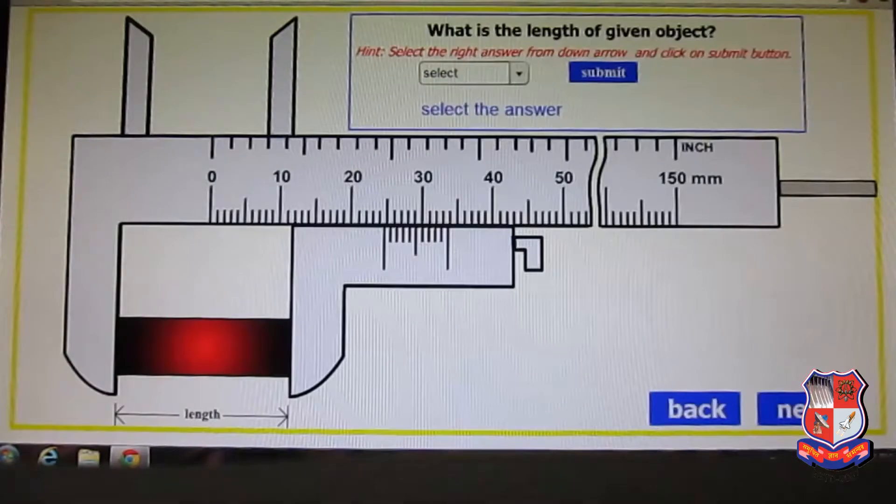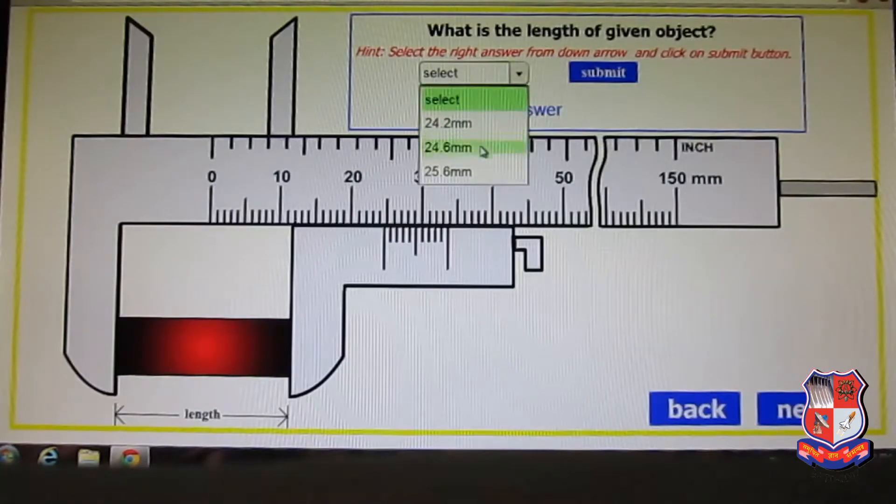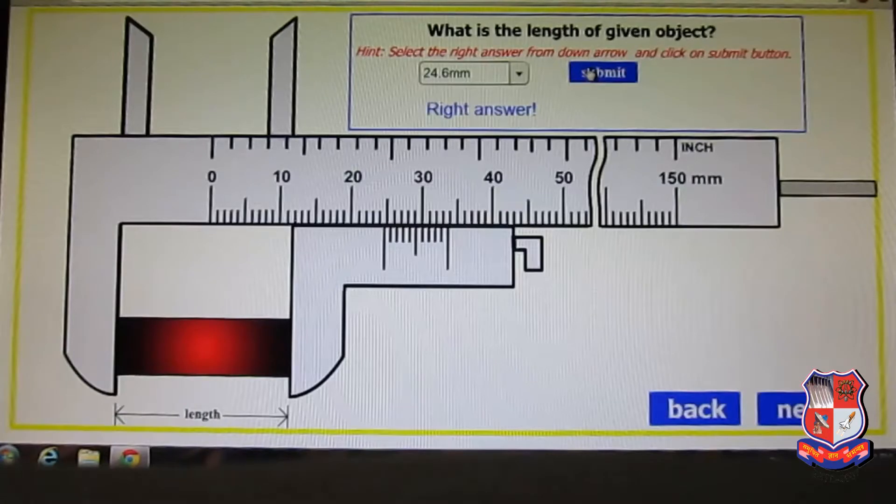Let us see a few more examples. We have to select the answer from this window. What is the dimension? That is 24 plus 6. How? The sixth division is aligned with this one, so 0.6 is the vernier value and 24 is the complete value, so 24.6mm will be our answer. Let me submit the button. Okay, we are right.